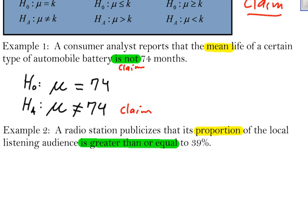But a radio station publicizes that the proportion of the local listening audience is greater than or equal to 39%. That's the claim. Well, that claim is going to be in my null hypothesis. They're saying that the proportion is greater than or equal to 39%. And that's where the claim is.